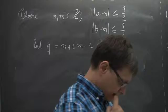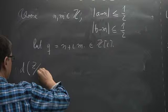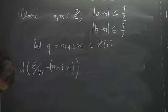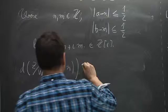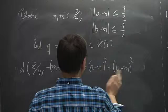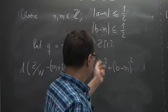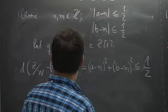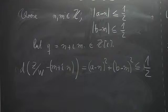We compute: d of (z/w minus (n + im)) equals (a minus n) squared plus (b minus m) squared, which is at most one-quarter plus one-quarter, so at most one-half.